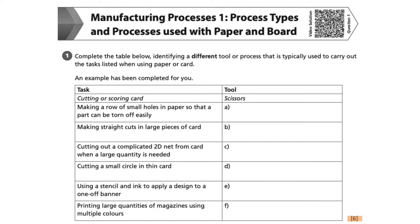Equally, there are 6 boxes — A, B, C, D, E, F — which we need to complete. Therefore, we can assume that we will be awarded 1 mark for each correct answer per box.